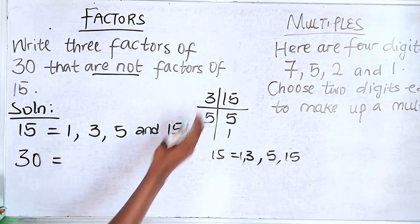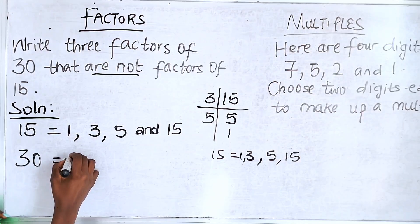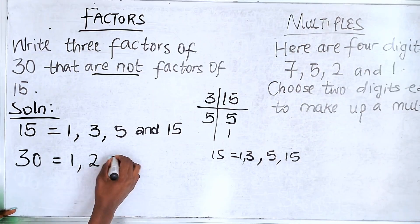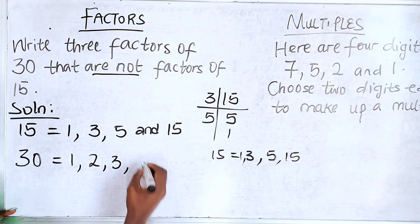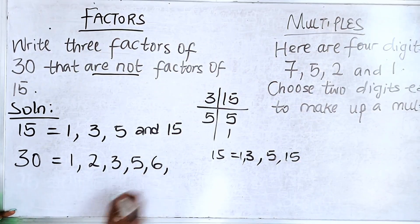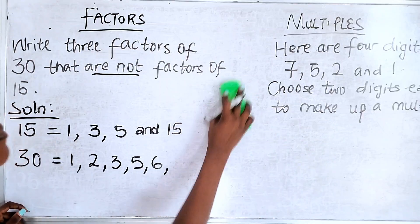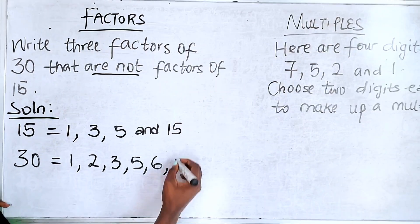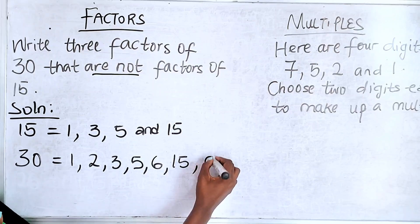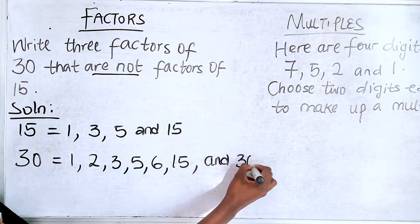Now for 30, you can do the same thing. 1, 2 can go in 30 without any remainder. 3 can go in 30 without any remainder. 5 can go in 30 without any remainder. 6 can go in 30 without any remainder. 15 can go in 30 without any remainder. And 30 itself.